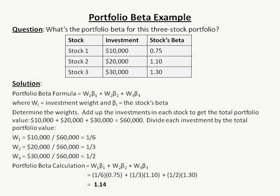So let's go through this example. It's only three stocks, and we see the investment in each stock and the specific stock's Beta. In order to get the Portfolio Beta, it's just a weighted average. In general, the Portfolio Beta is the summation from i equals 1 to n of w_i times beta_i.